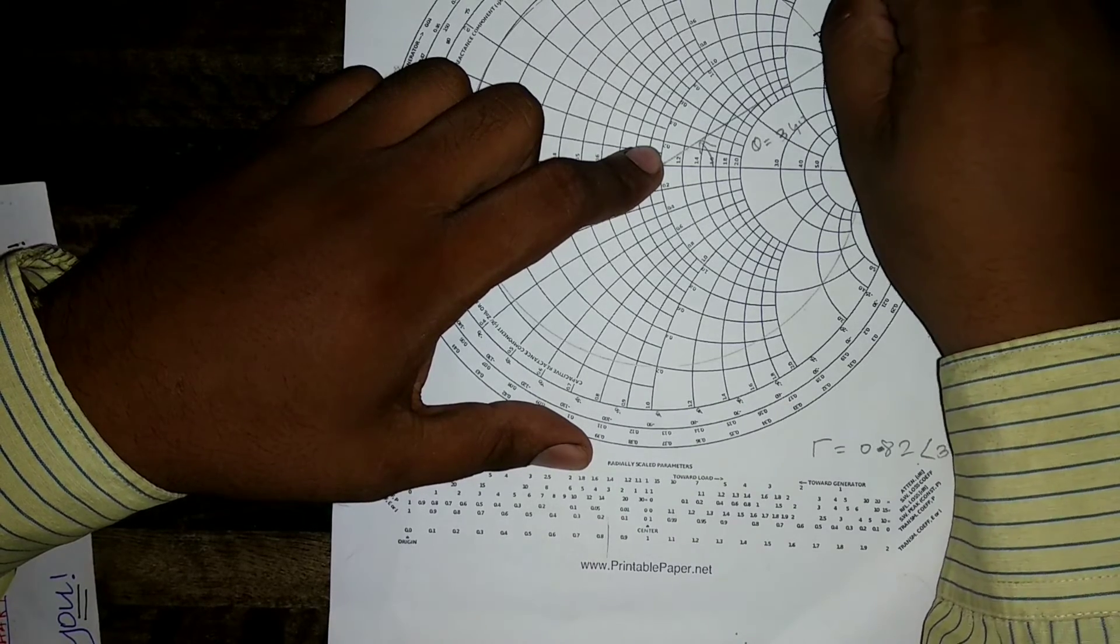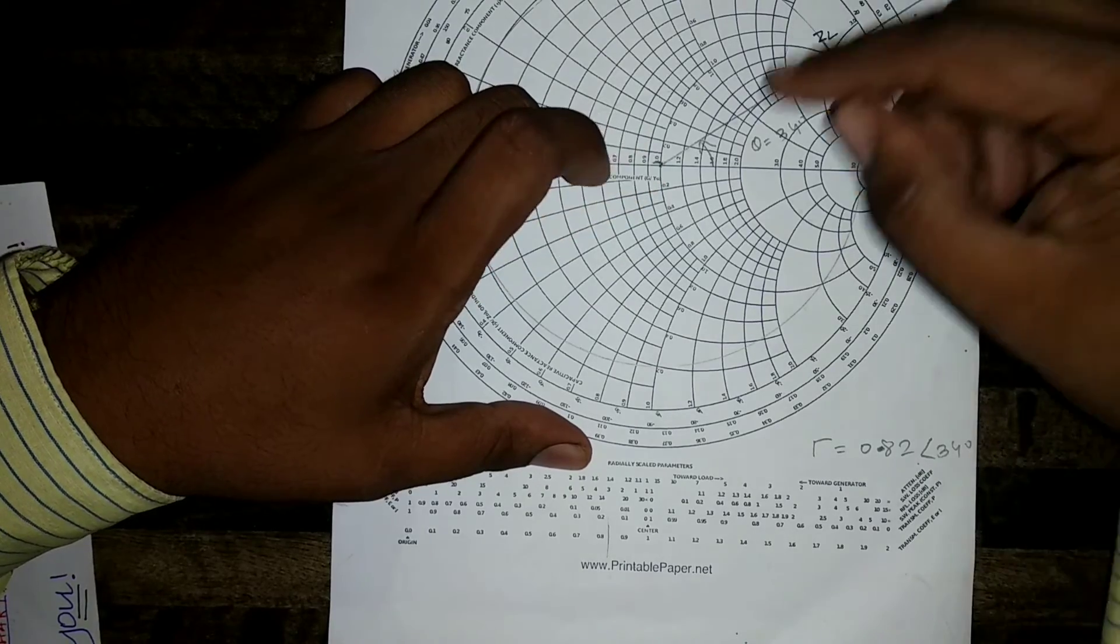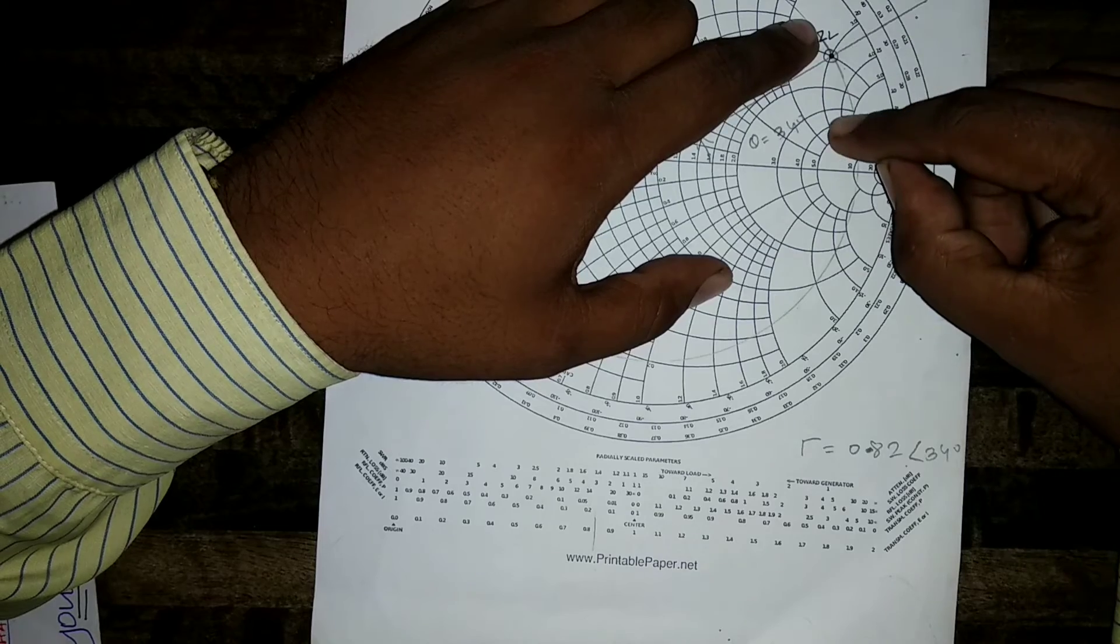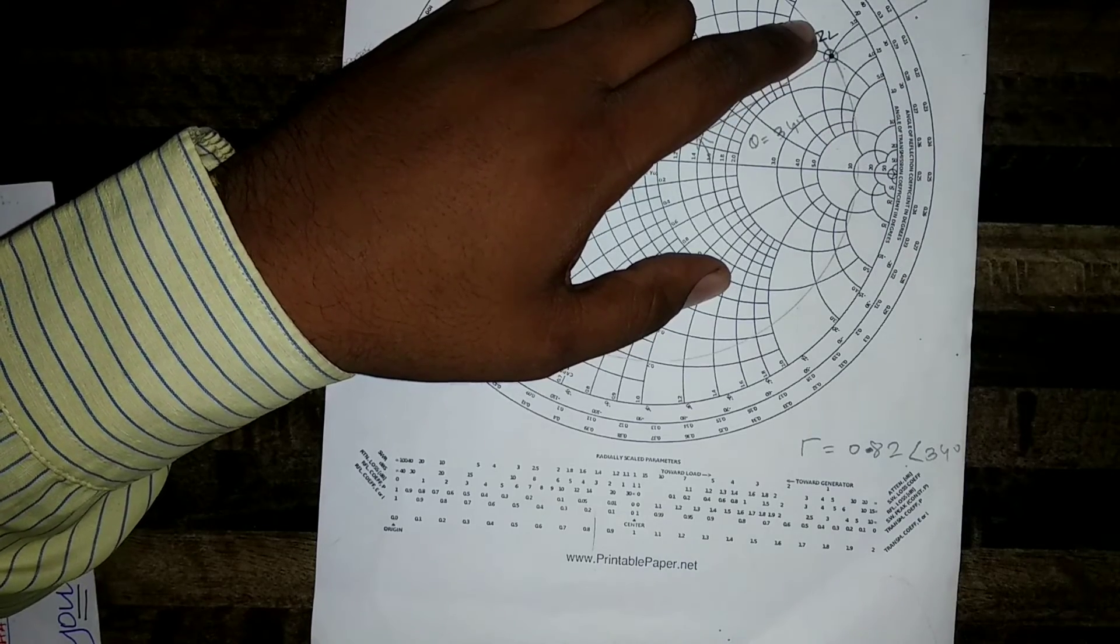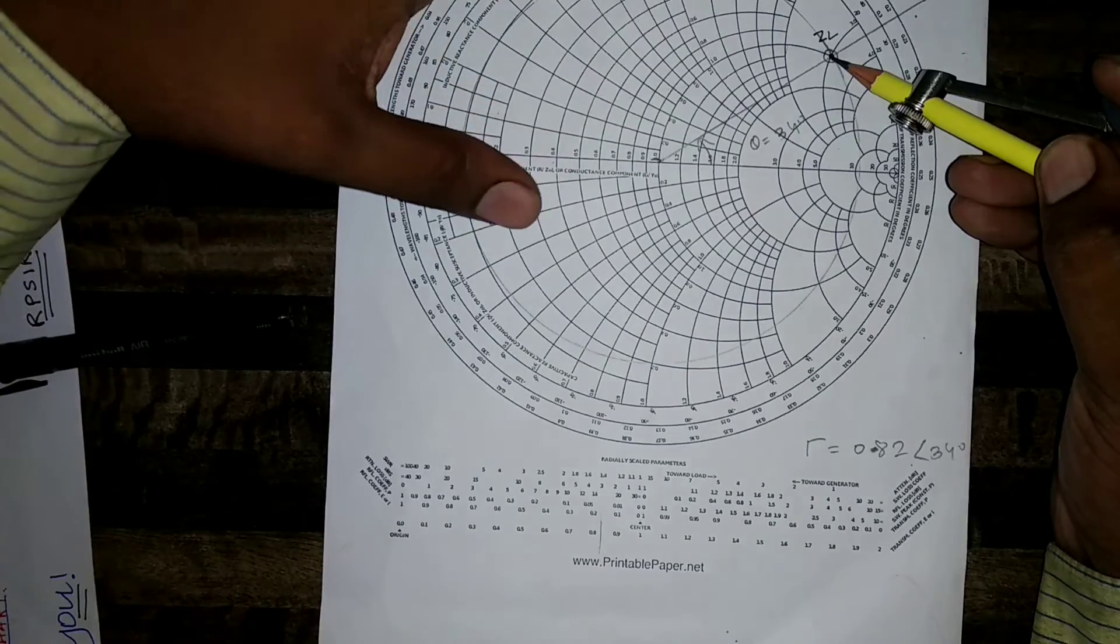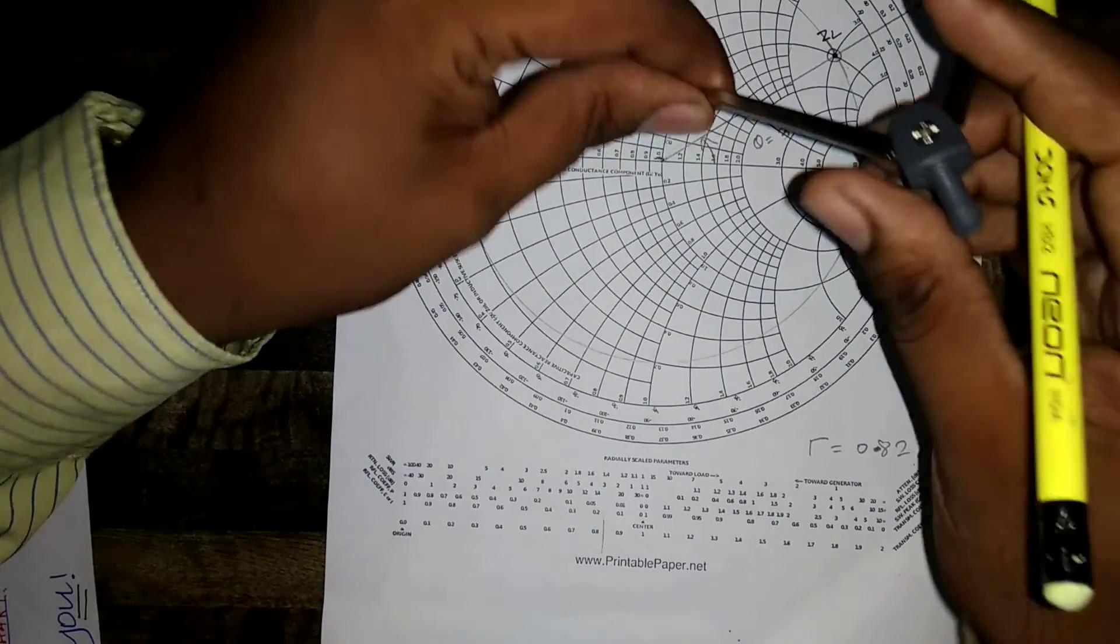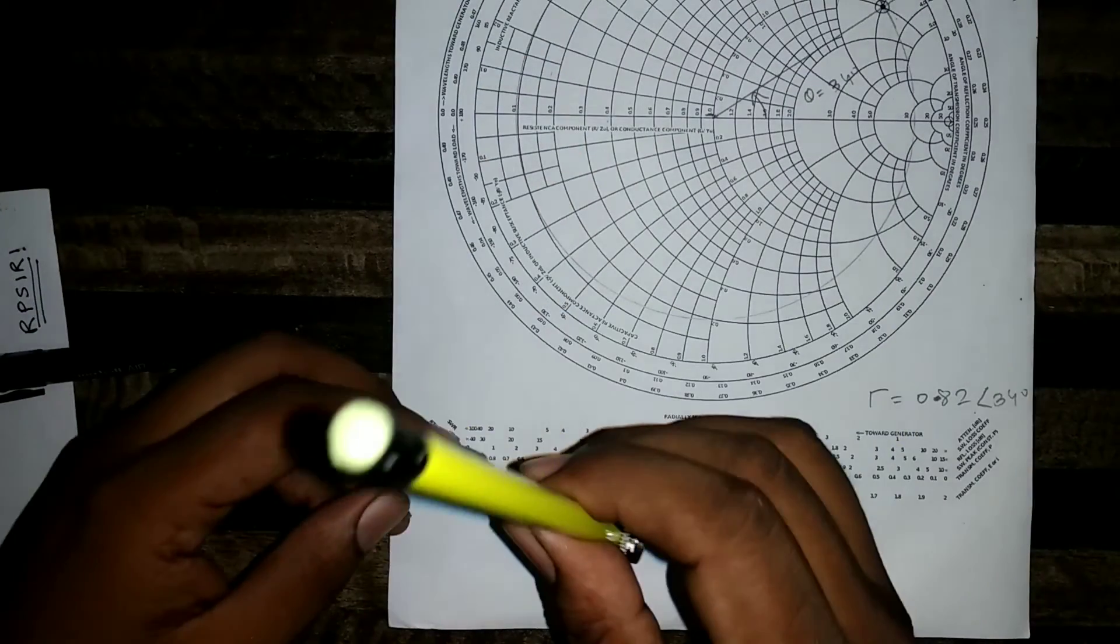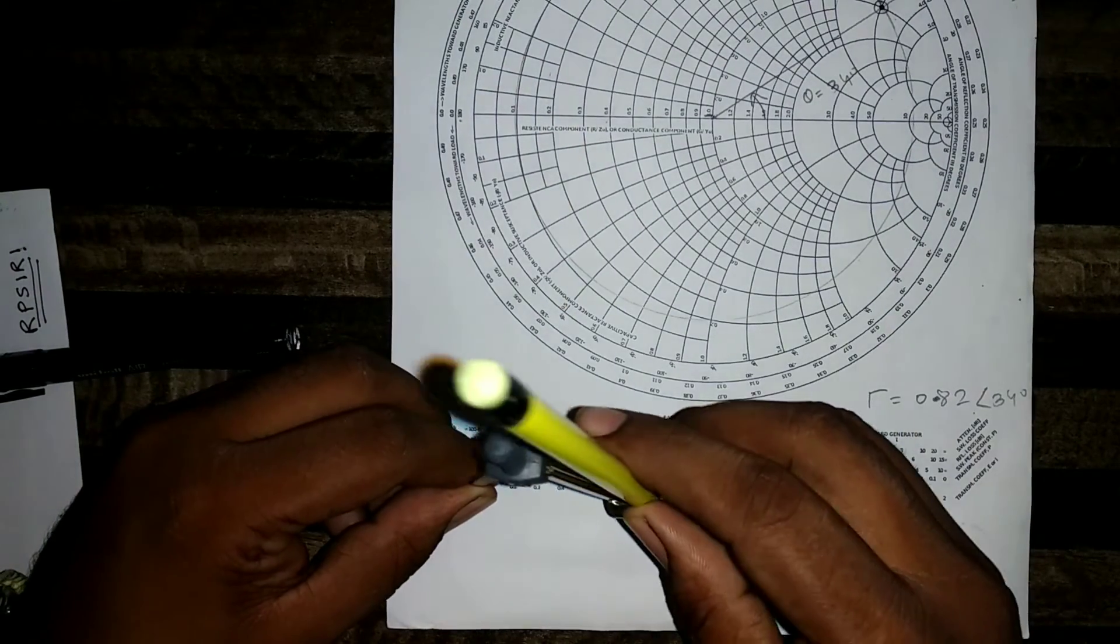Once I repeat, I have to locate a point R equal to 1 and x equal to 3. This is my R equal to 1 circle. This is my x equal to 3 arc. Now I have located this point R equal to 1 and x equal to 3. Then taking this distance radius distance in the rounder, you can go to the scale given below the smith chart. Mark a point.